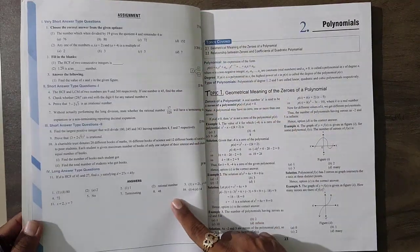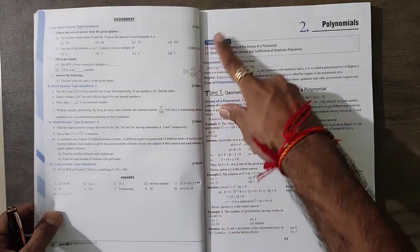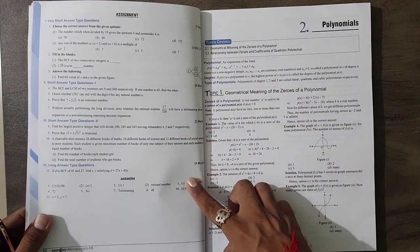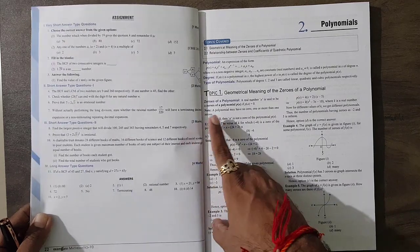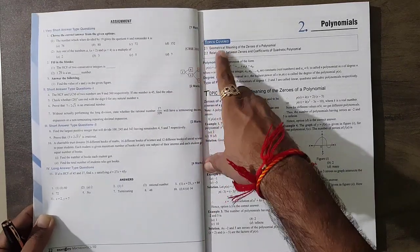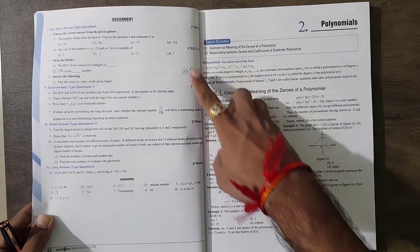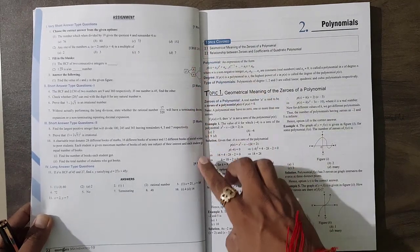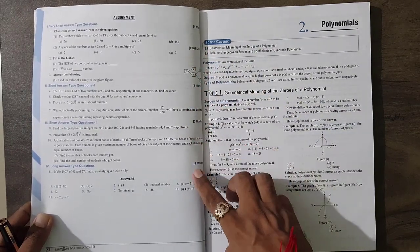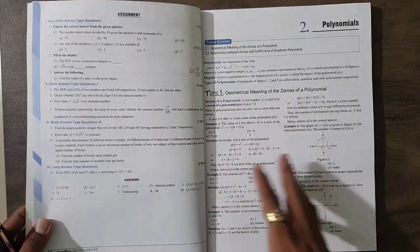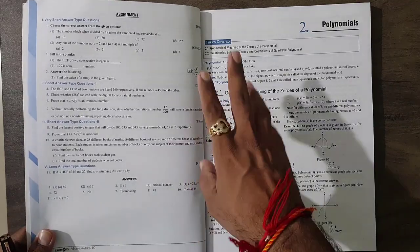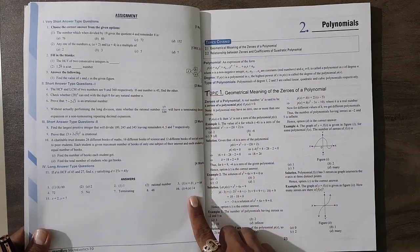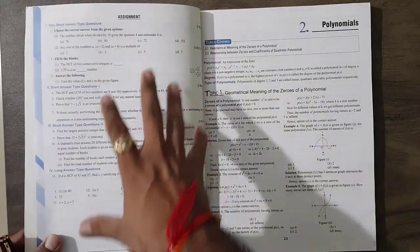After every chapter they try to give you some small assignment containing questions. This contains a small paper with different mark questions - one mark some questions, two mark some questions, three mark, four mark, and the answers also. So every chapter covers this type of thing.